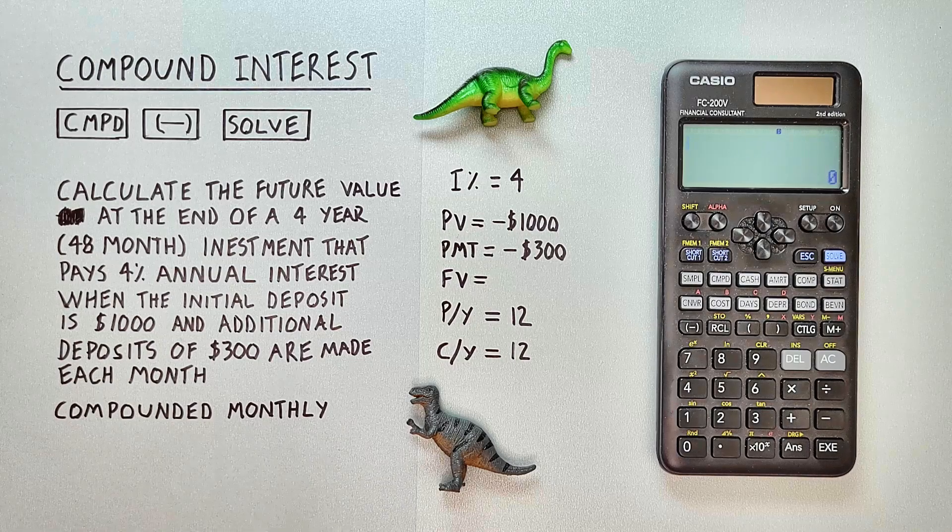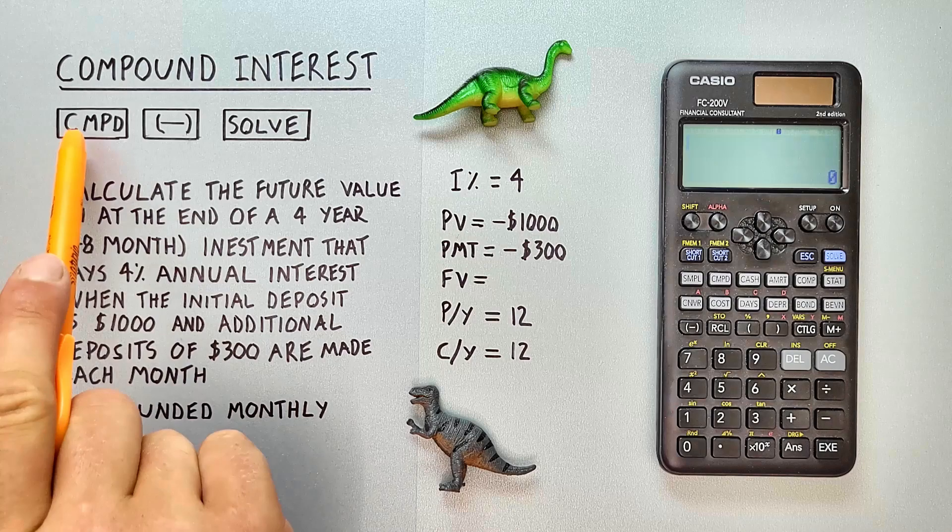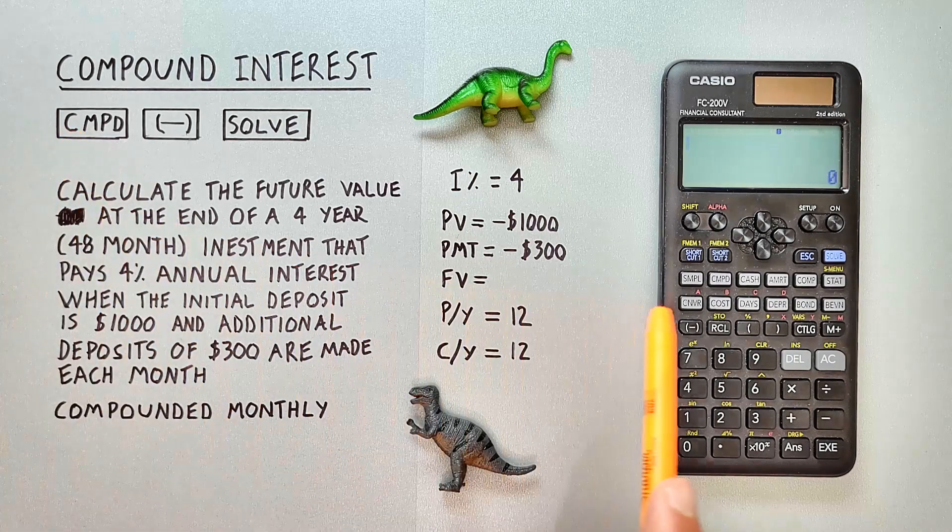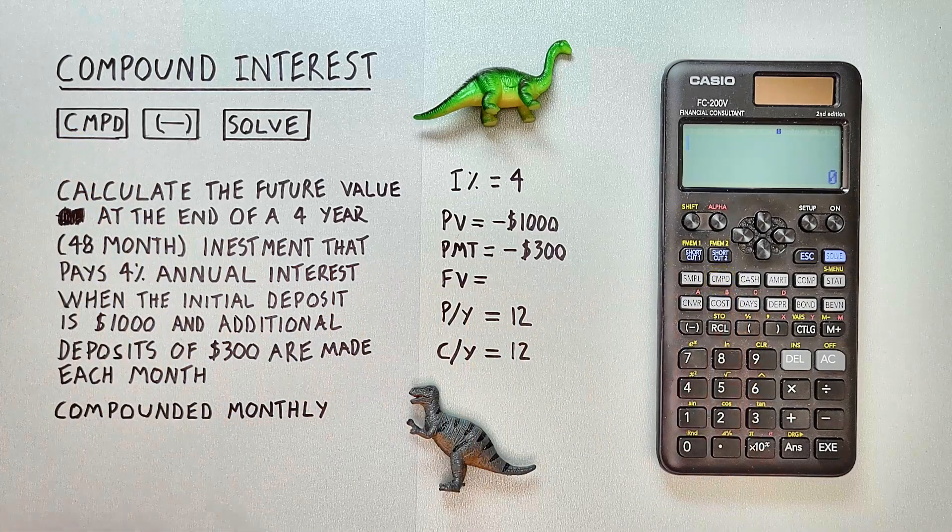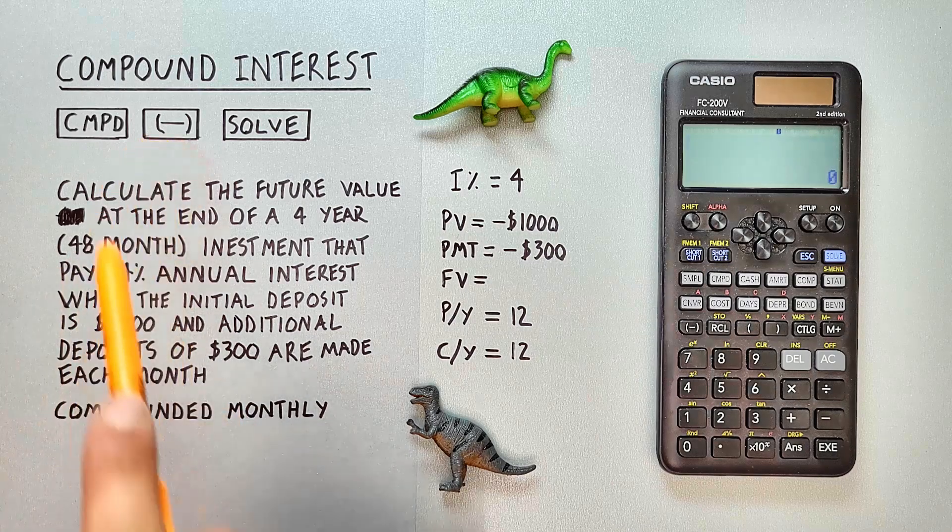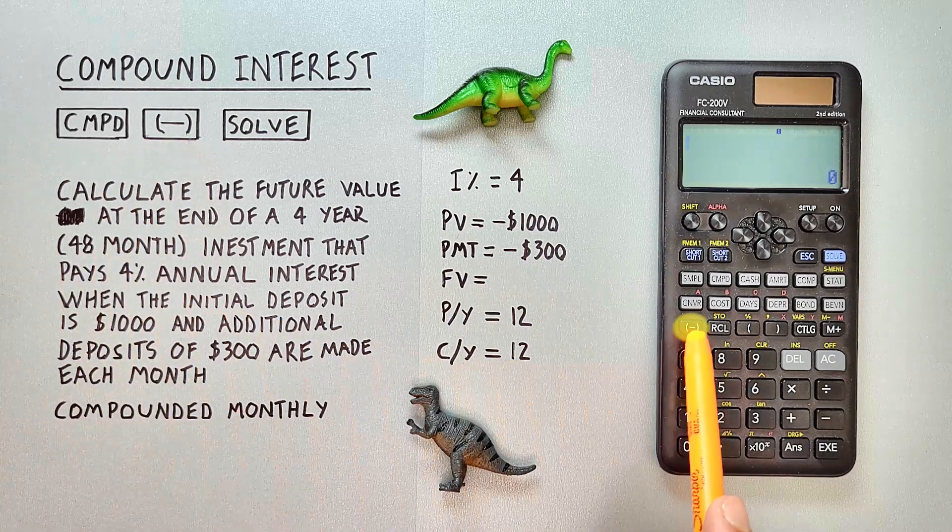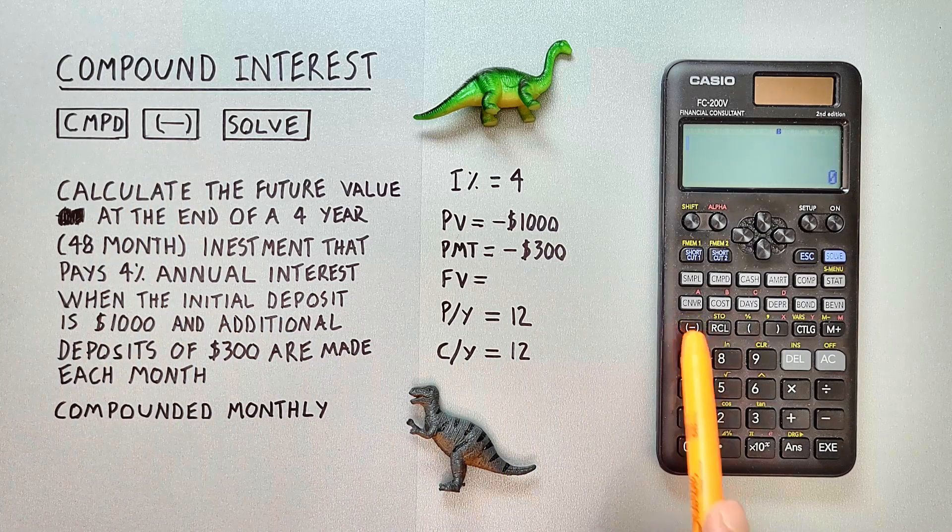To do this we'll be using the compound key that looks like this located here. The negative key that looks like this located here and it's important to note is different than the subtraction key.